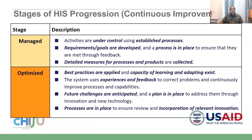When we reach the managed stage, activities are under control using established processes, requirements and processes are in place, and detailed measures are collected. The optimized stage is a type of maintenance — best practices are being applied, capacity for learning and adaptation exists, experience and feedback are in place, and we are anticipating rather than waiting to be surprised. Processes are also in place to ensure relevant innovations are incorporated.